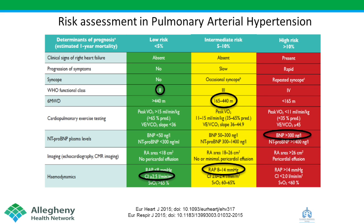The other problem with this simplified scoring system is that these factors aren't weighted against each other — you don't know whether an elevated BNP is more important than a longer six-minute walk distance. That's where the rise of risk equations and risk algorithms comes in.